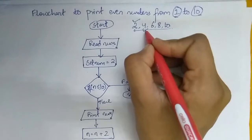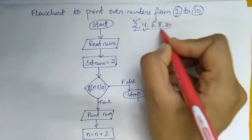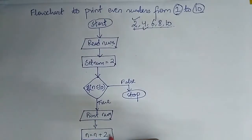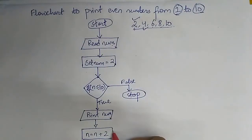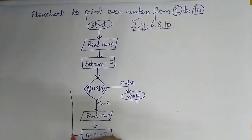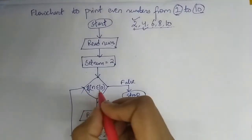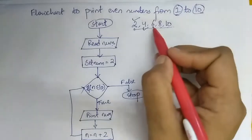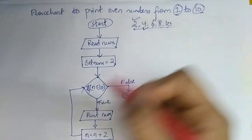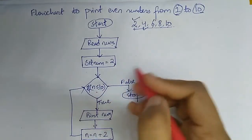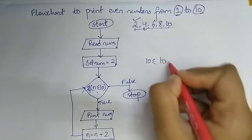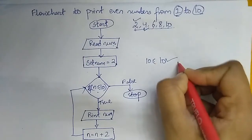Every time 2 is added: 4 + 2 = 6, 6 + 2 = 8, 8 + 2 = 10. Each time the condition is also checked — whether the current value is less than or equal to 10 — for 4, then 6, then 8, then 10.